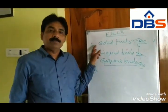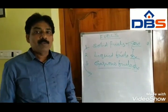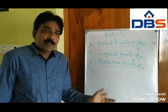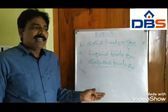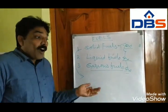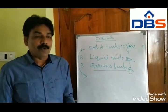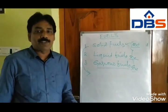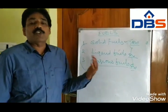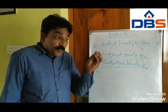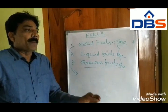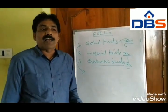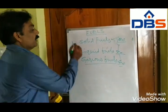Solid fuels are classified into four types: peat coal, lignite coal, bituminous coal, and anthracite coal. Peat coal is the least ranking of coal, while anthracite coal is the highest ranking. Peat coal has low calorific value and anthracite coal has the highest calorific value. Any fuel is a good fuel depending upon its calorific value. Anthracite coal is the best among coals.